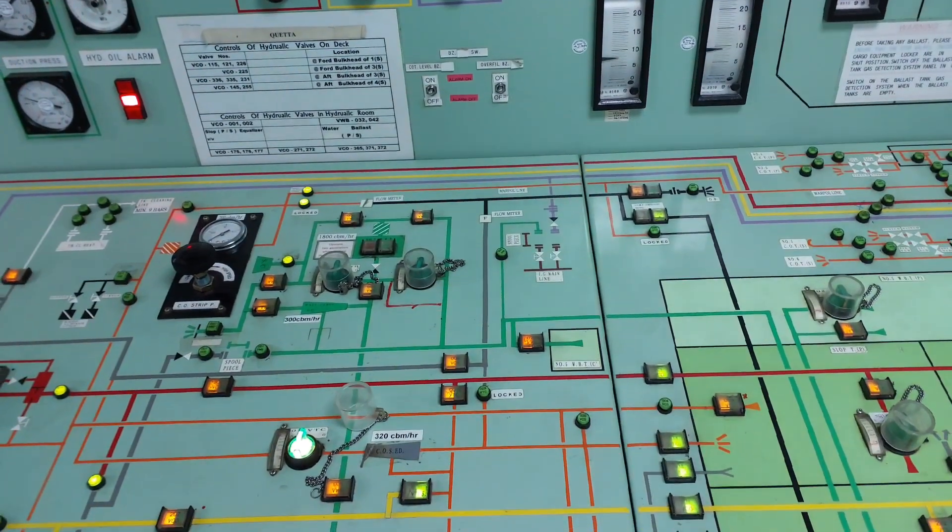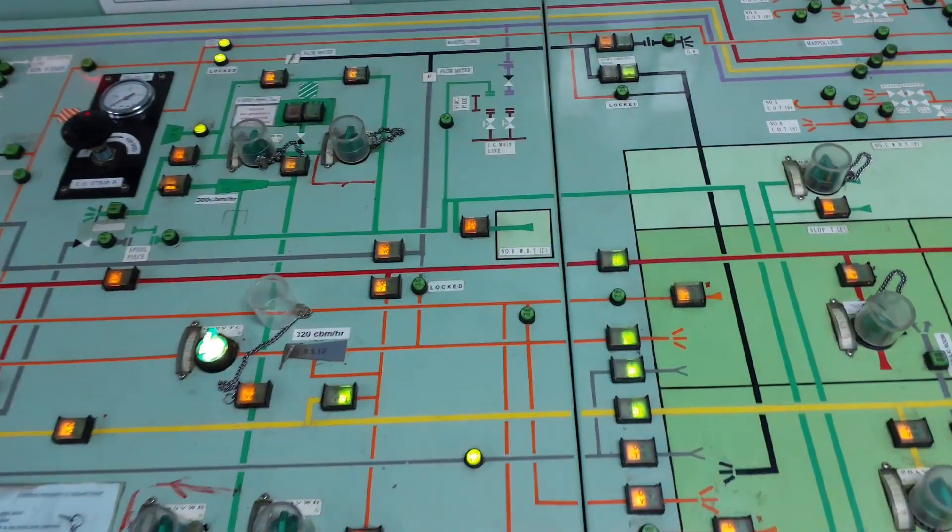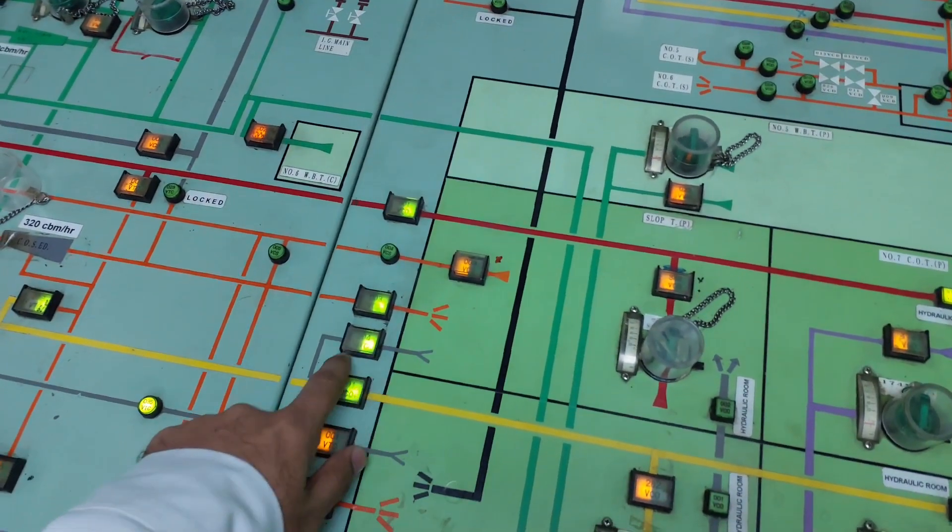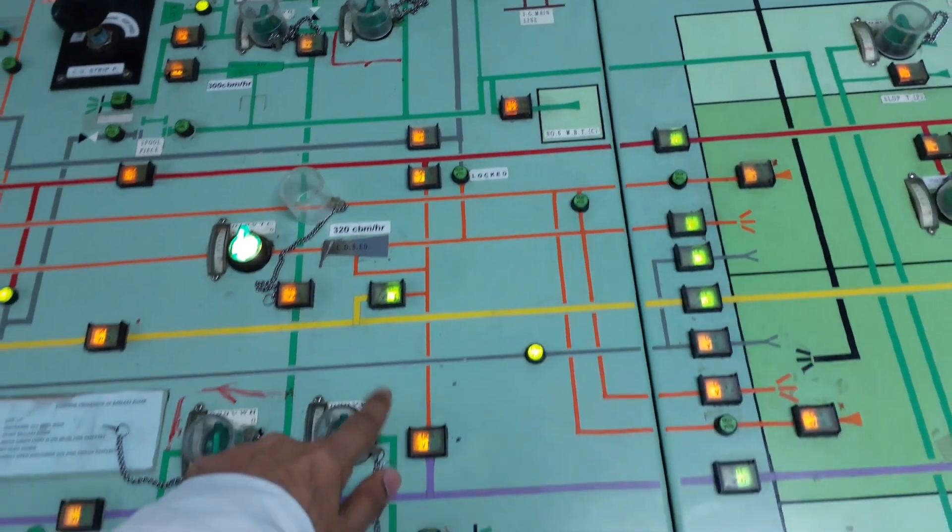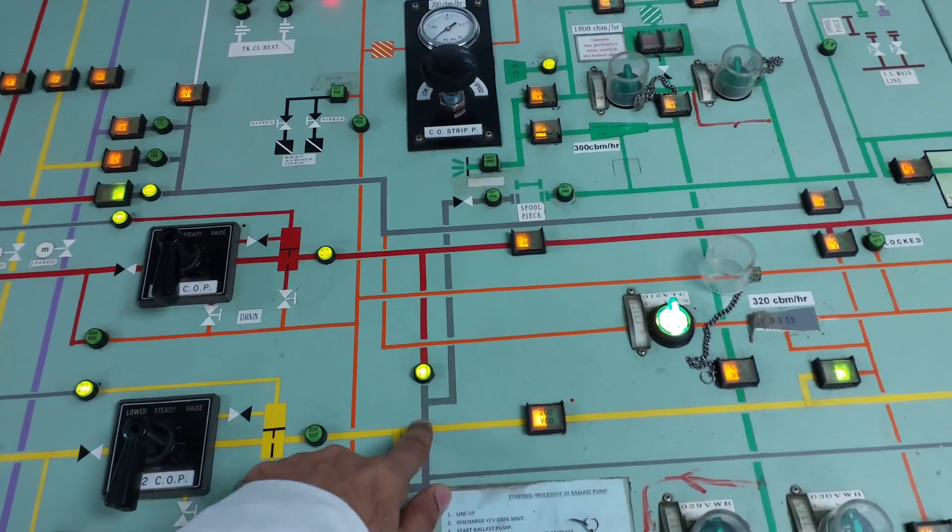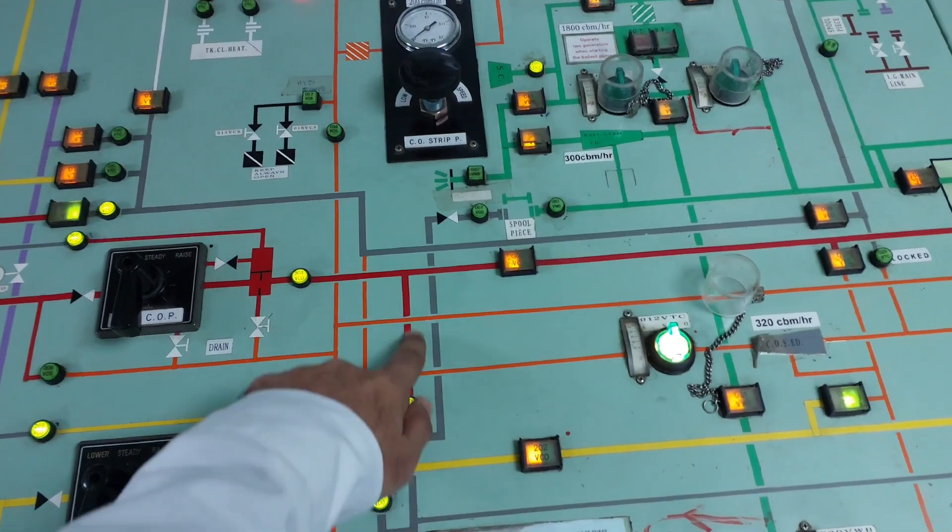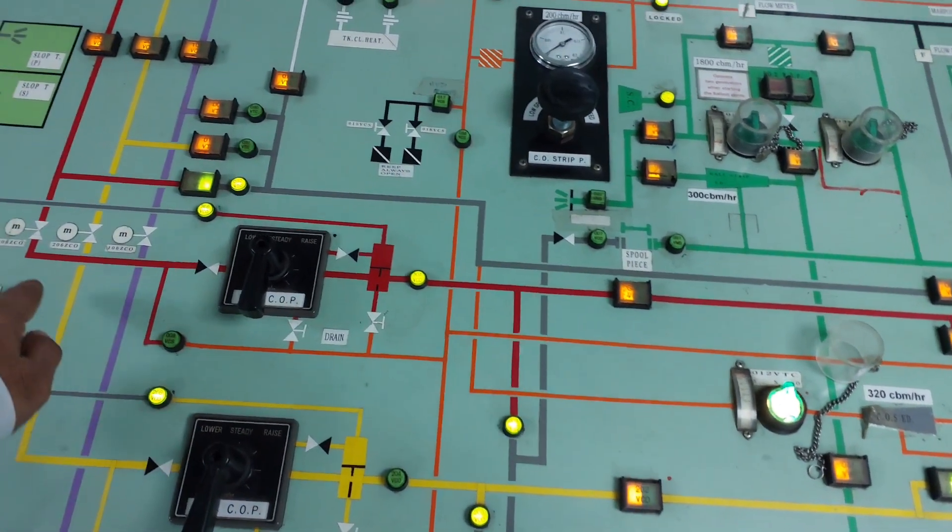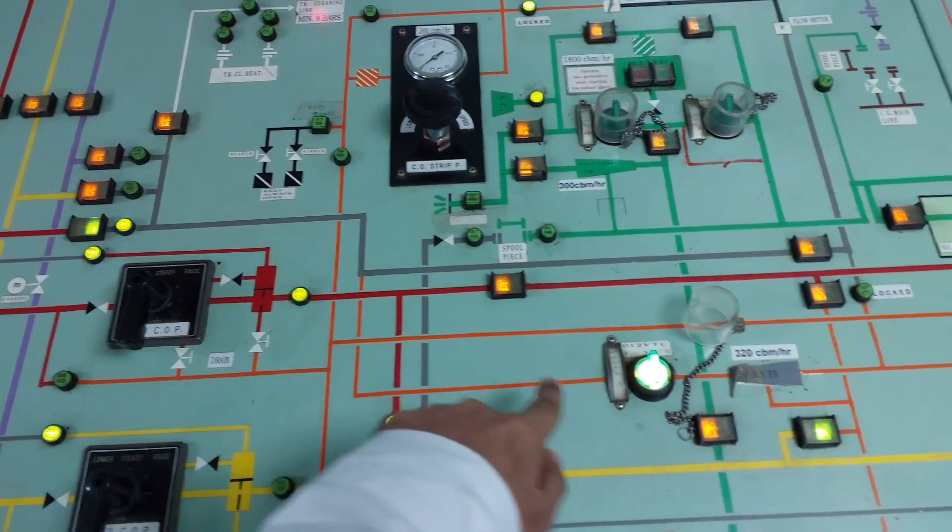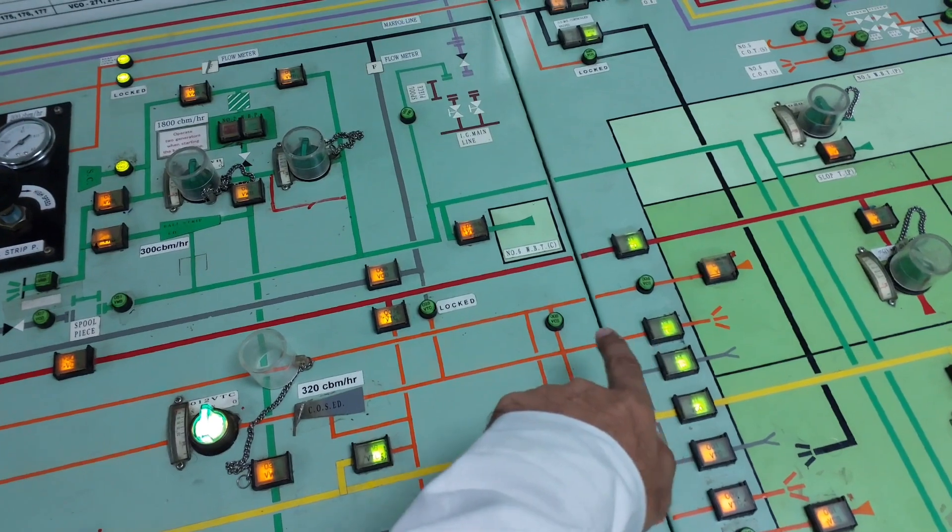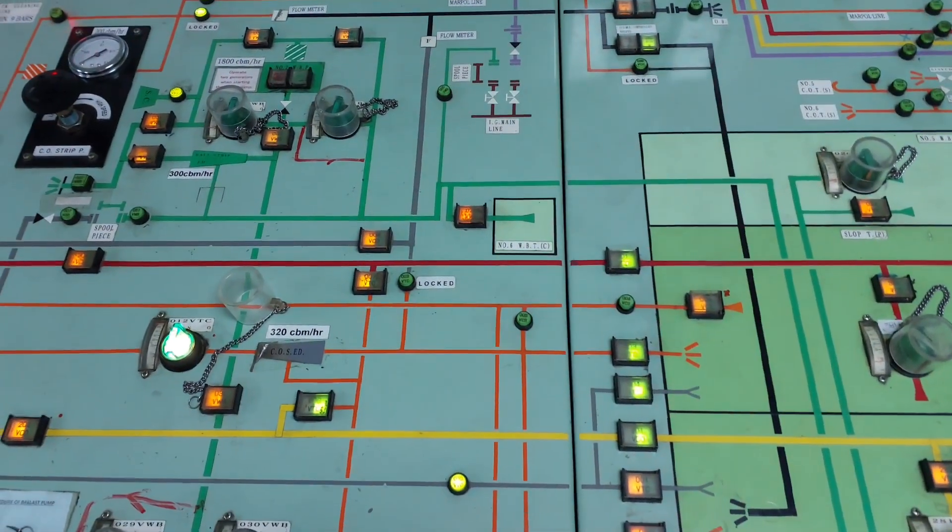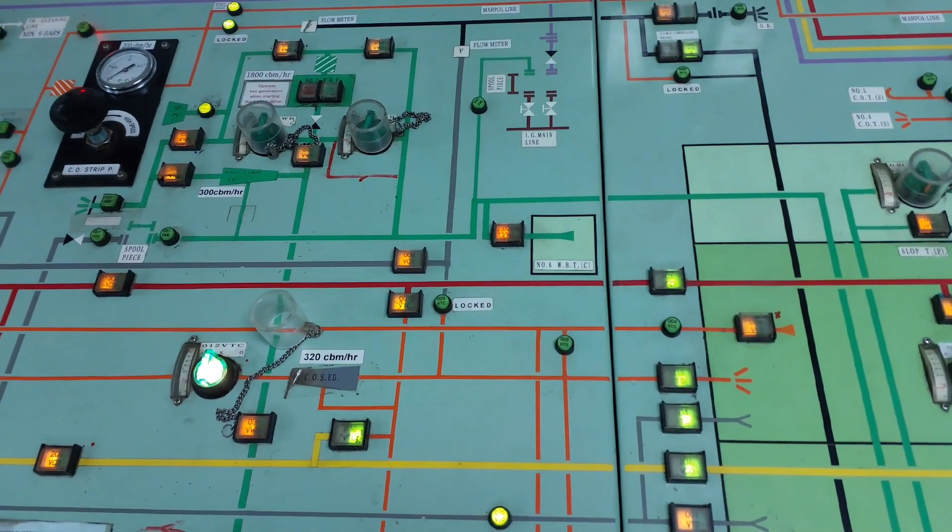So COP is running. For reduction, we have to do slop to slop. We have to run the COP slop to slop through an eductor. So here we are taking cargo from the slop through this line, going to crossovers. From crossover, going to COP number three. After COP number three, cargo is going to an eductor and then back to slop.